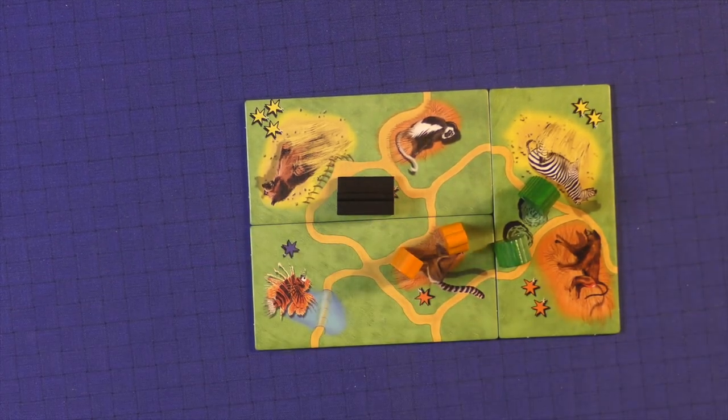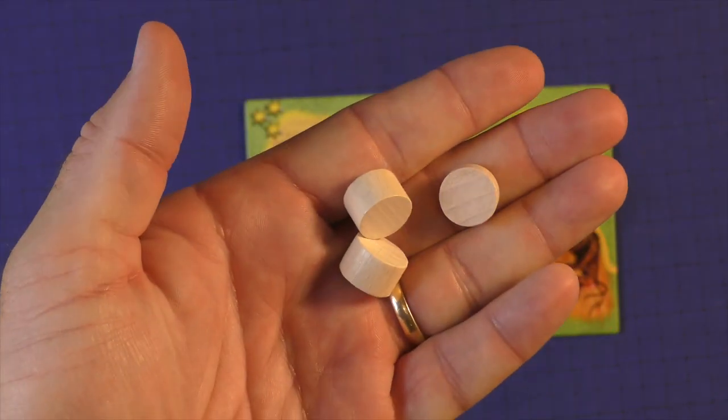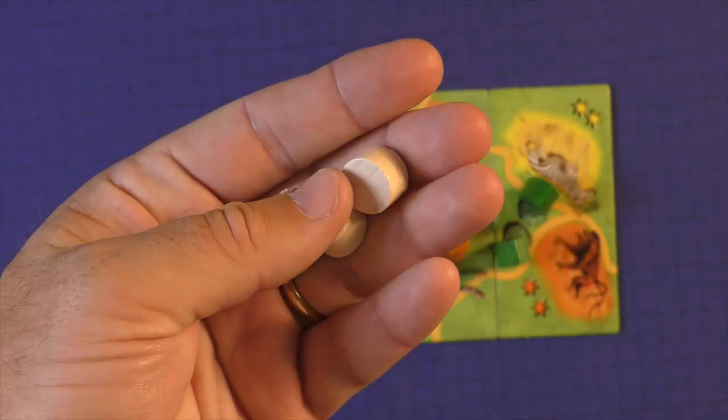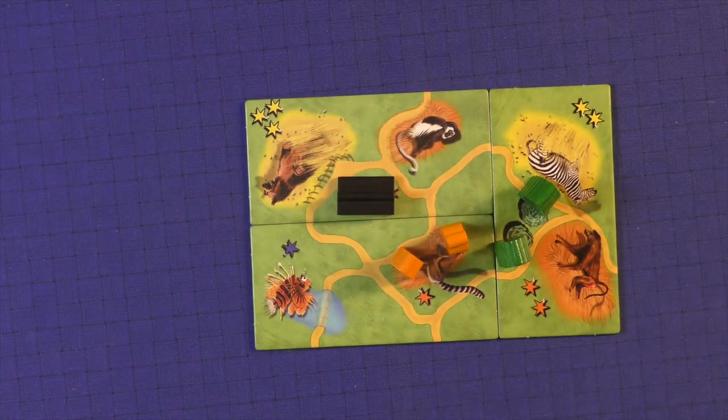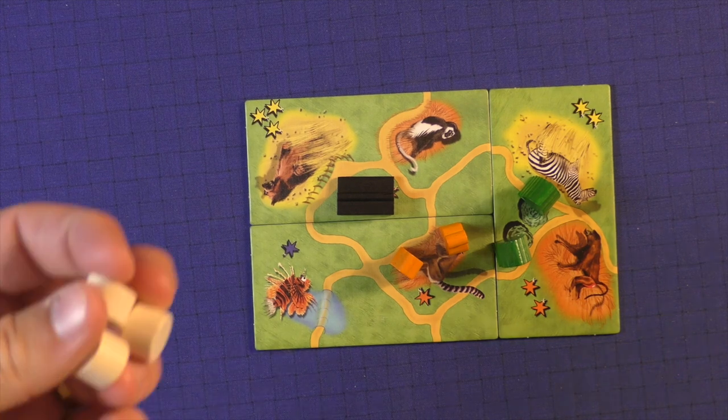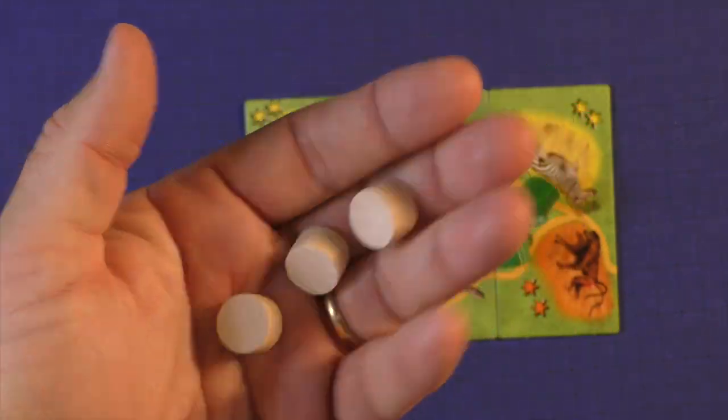For each tile, you're going to get a number of coins back. So I have three tiles, I'm going to get three coins back that I'll be able to utilize in the bidding. After five rounds, whoever has the most money is going to be the winner of the game.